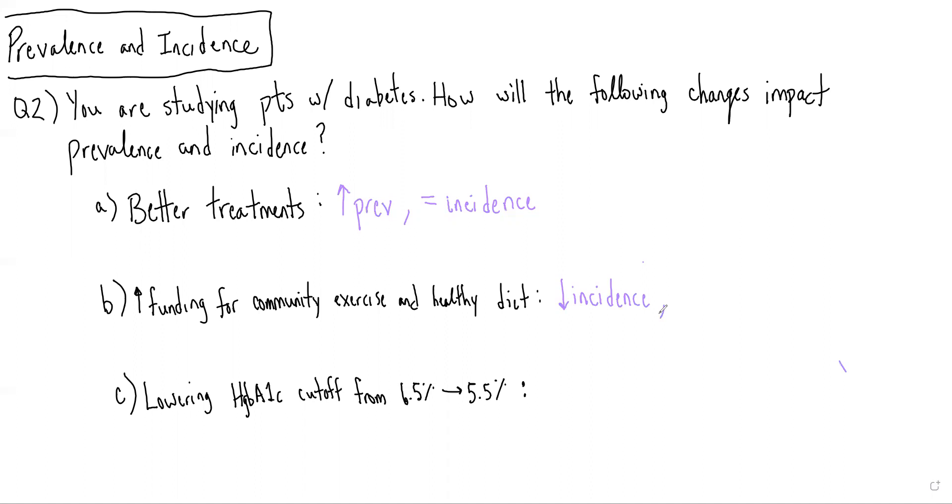From the lecture, we discussed that one of the things that can decrease prevalence is decreased incidence. So in this case, if there are less patients who are developing the disease in the first place, there's going to be less patients walking around with the disease in the population. So we would expect both incidence and prevalence to go down.